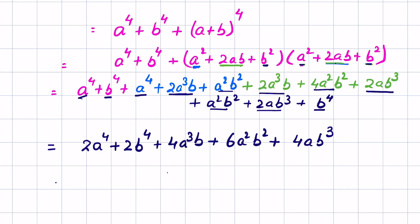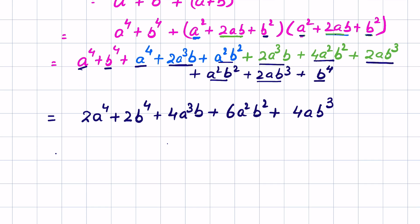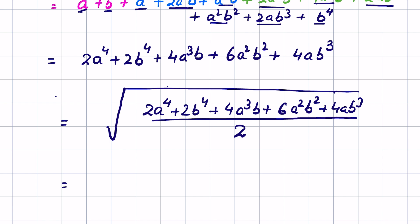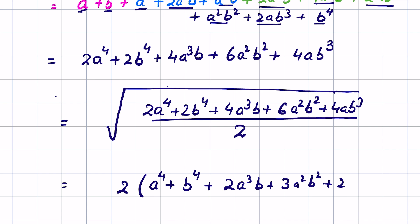Now we can take 2 as common. The entire numerator becomes 2a⁴ plus 2b⁴ plus 4a cubed b plus 6a squared b squared plus 4ab cubed, all upon 2. Taking 2 as common gives a⁴ plus b⁴ plus 2a cubed b plus 3a squared b squared plus 2ab cubed, upon 2.